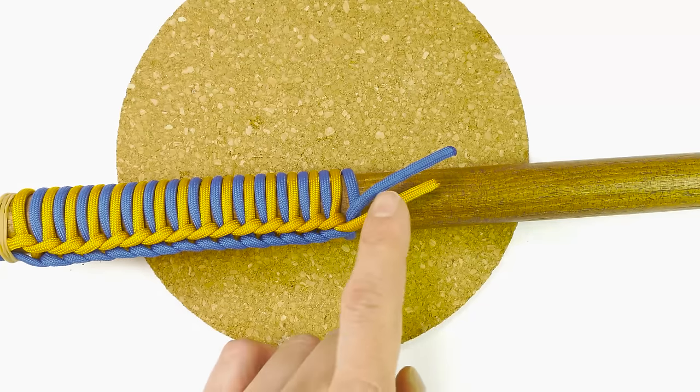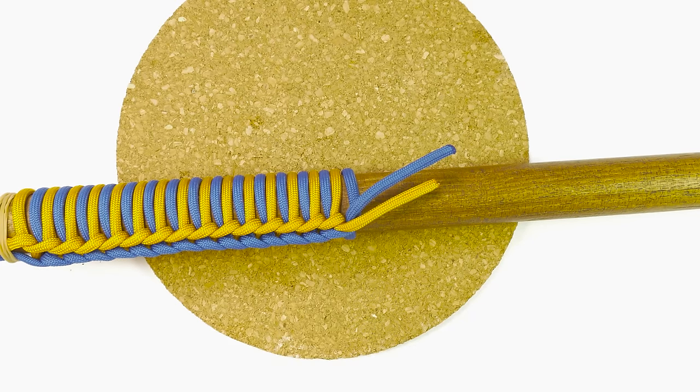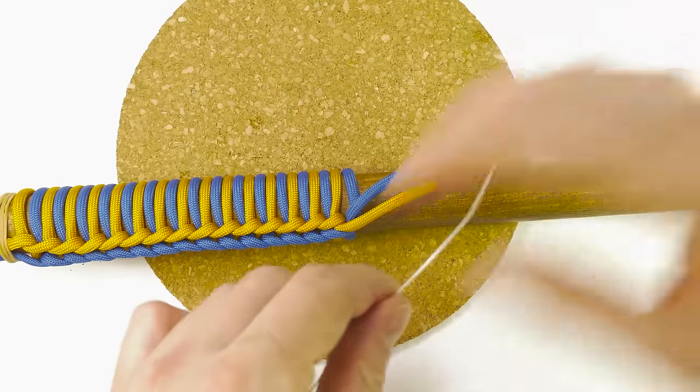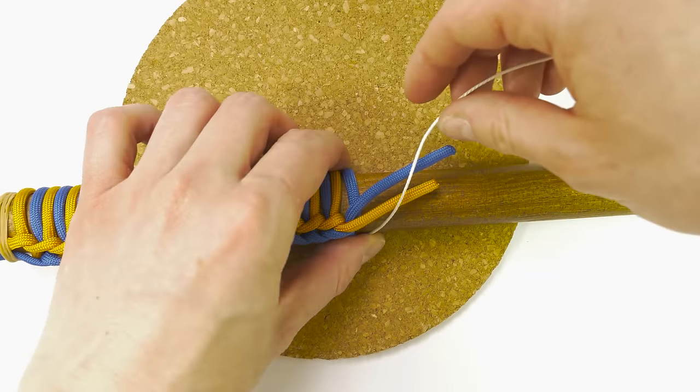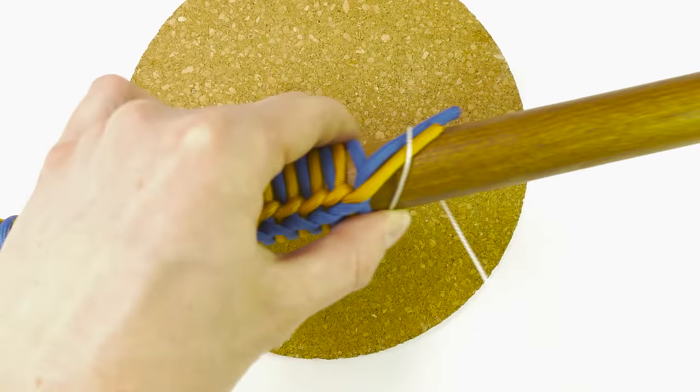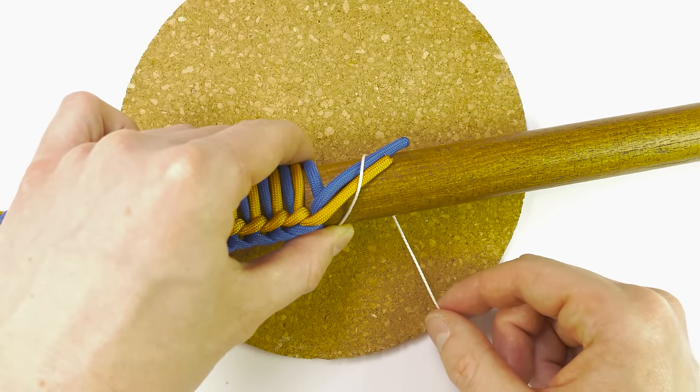We're going to start by making a constrictor knot over our two ends. Wrap around once, and then go over your first strap, creating an X.